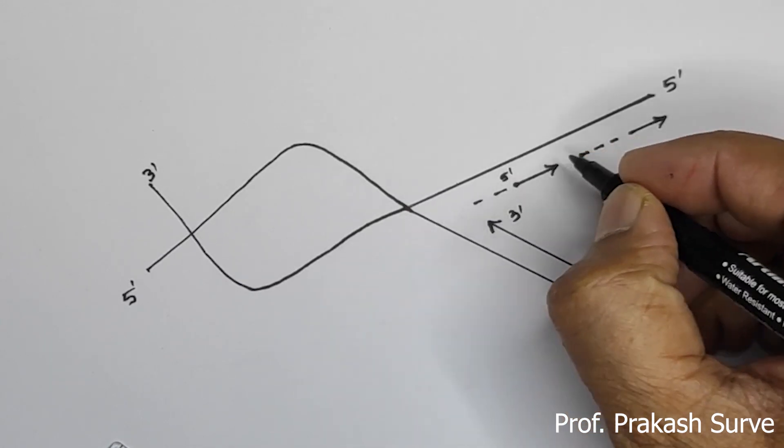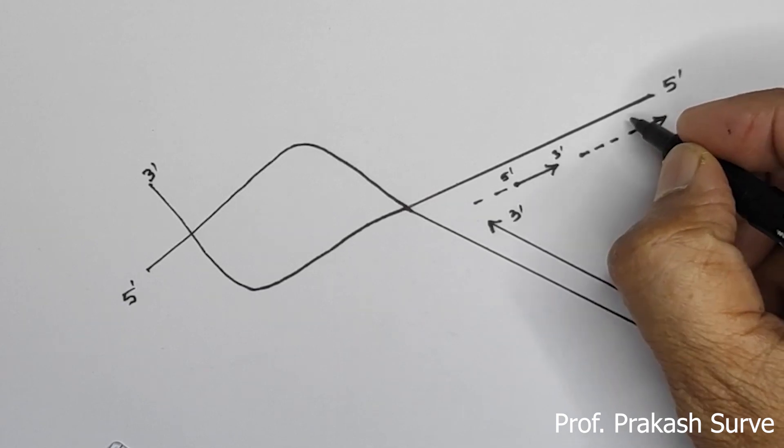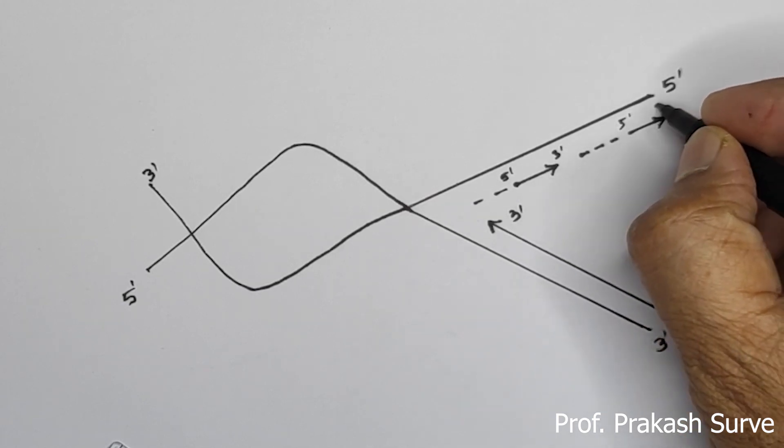Same way here we get the 5 dash and 3 dash, continue with the 5 dash and the 3 dash.